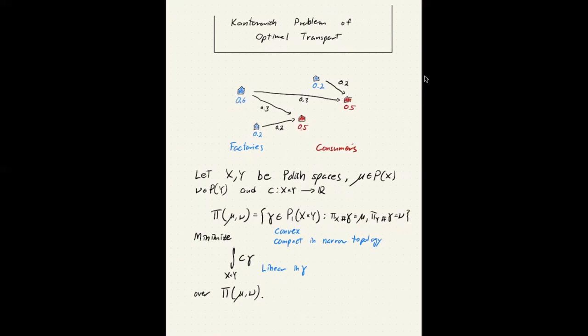Now, this is also interesting if we compare it to Monge's problem of optimal transport, where the set we're optimizing over is the set of transport maps, which are maps from X to Y which push forward the source measure to the target measure. Now, this is not a convex subset of a vector space. And it's also very hard or impossible to put a meaningful topology where this is compact.